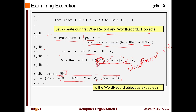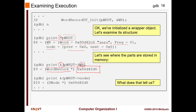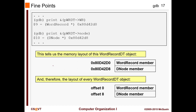There's an ampersand in the function signature, so it takes in a reference - that's why we are actually printing the address and not the value directly. This tells us the memory layout of the `word_record_dt` object. At the beginning of it it has the `word_record` member, and in the next part it has the `dnode` member. They are all connected - this is the whole `dt`, inside that the `dnode`, and so on. These are the offsets, and we use `offsetof` to figure out the payload's value.